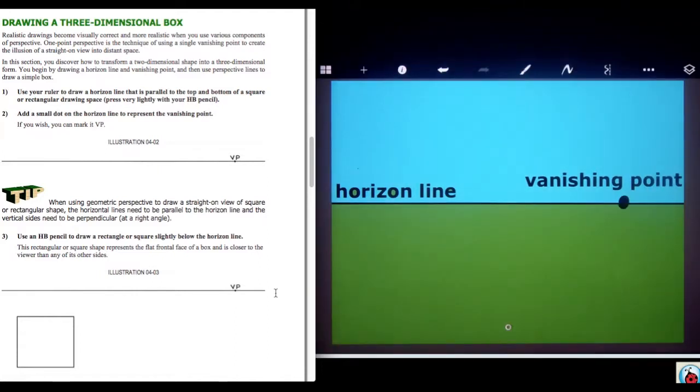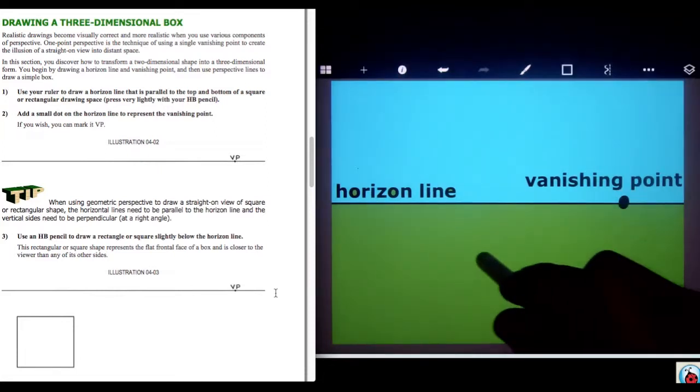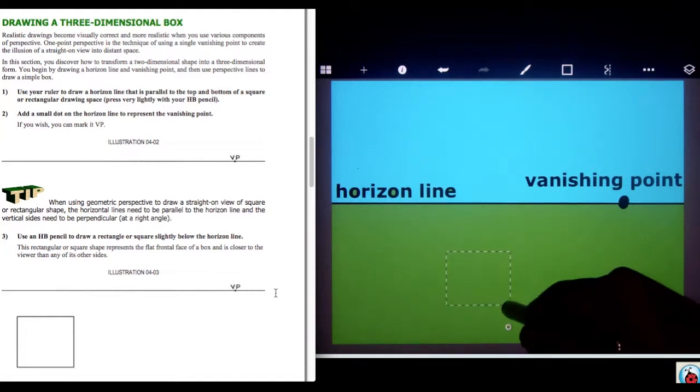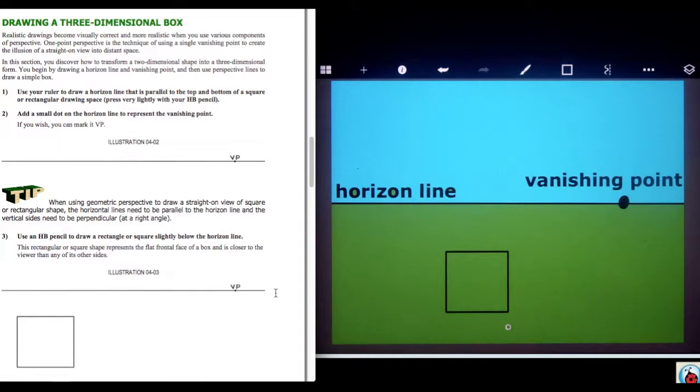Our next step is to use the rectangle tool to draw a square. I'm going to draw it just to the bottom left, like in that drawing by Brenda Hodnett in our handout here. So now we've done step one, create a horizon line with a vanishing point. And we've done step two, draw a rectangle or a square slightly below the horizon line.